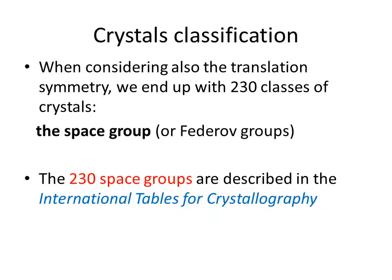When considering all symmetry and translation operations together, we end up with 230 crystal classes called the space groups or Fedorov groups, which are described in the International Tables of Crystallography.